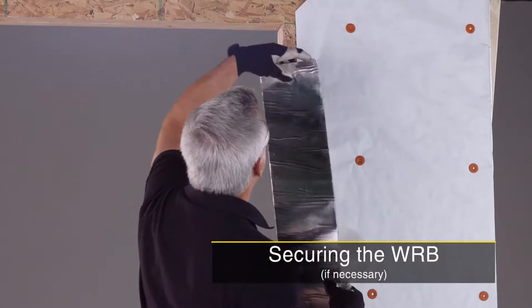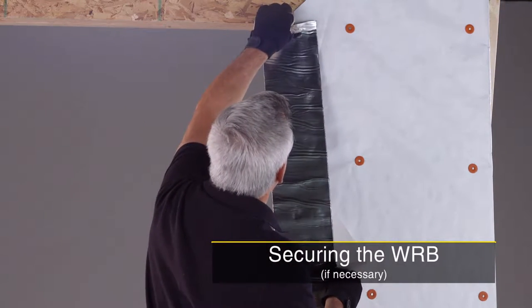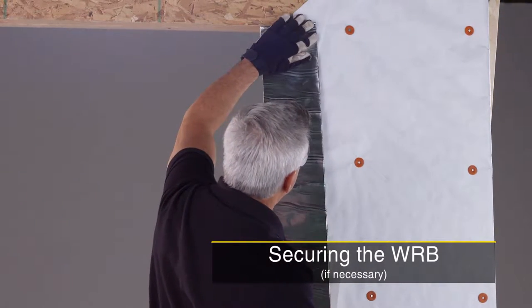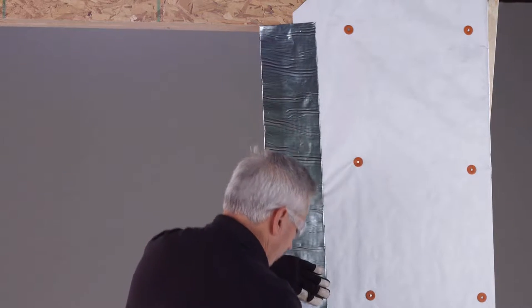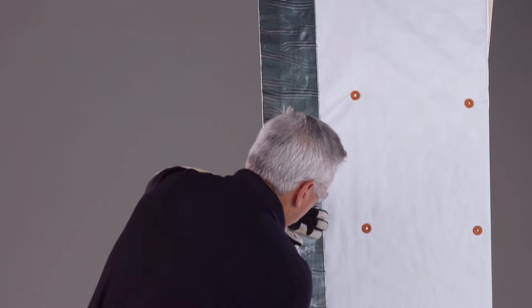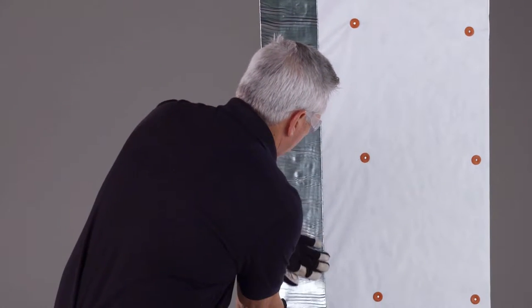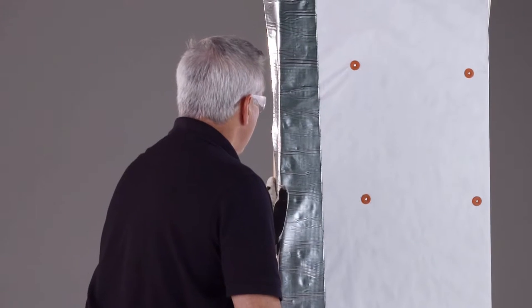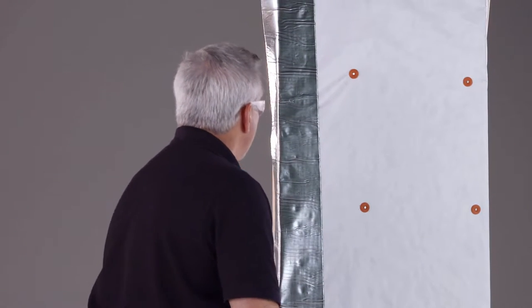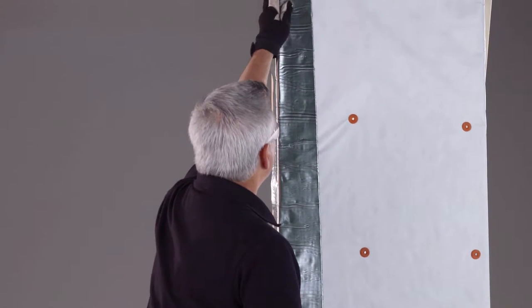If you are not able to install the window within 24 hours, you will need to secure the free-hanging edges of the WRB so it doesn't tear loose in the wind. One of the ways to do this is to apply flashing tape to the edge of the WRB so that it overlaps a minimum of one inch. Then wrap it into the rough opening, securing the WRB to the sheathing.